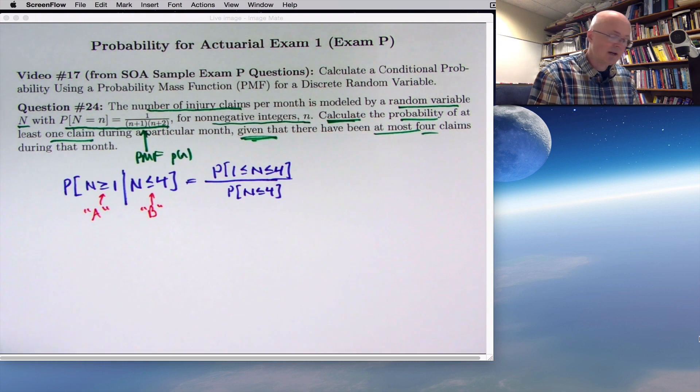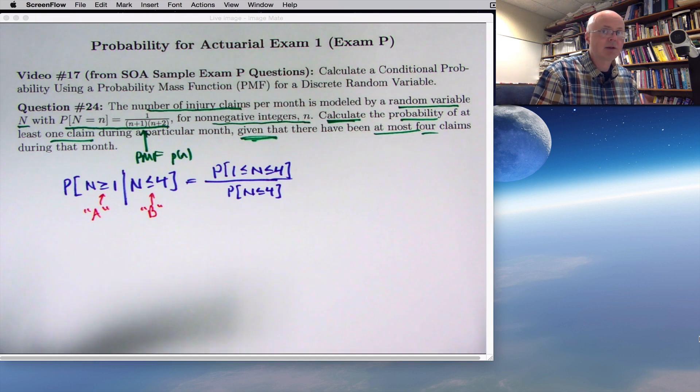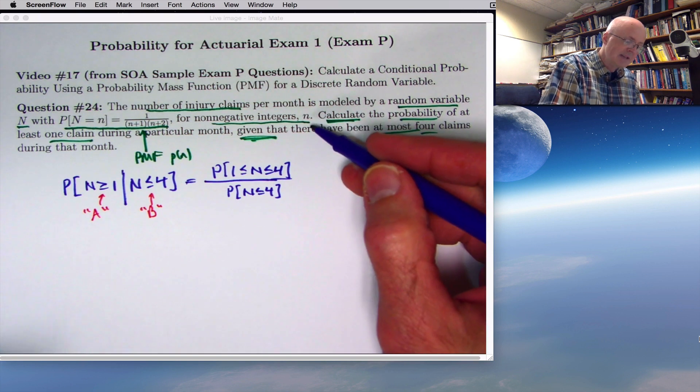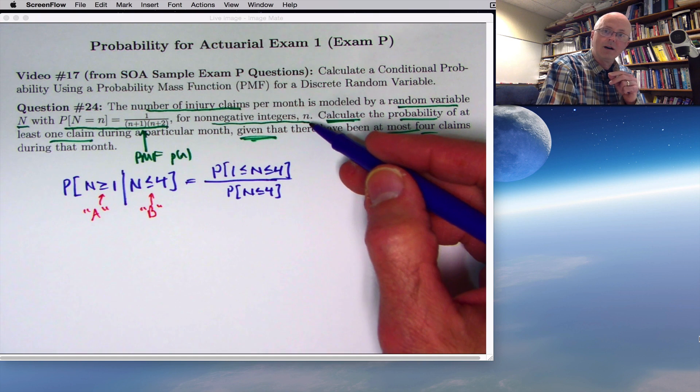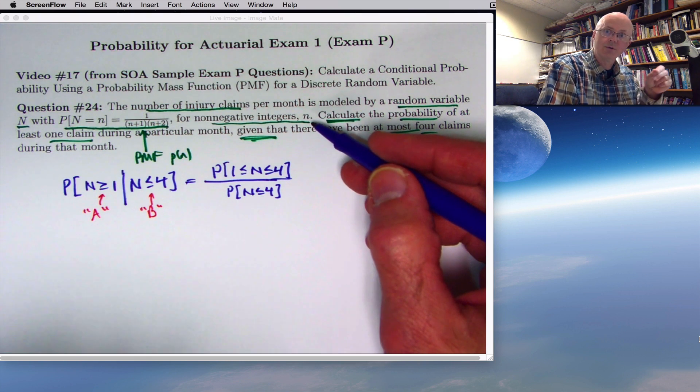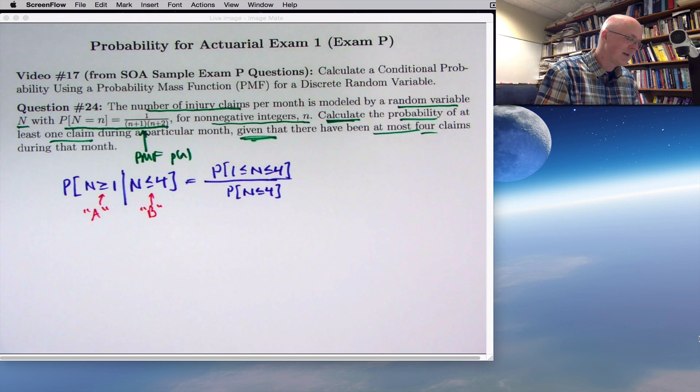By the way, the fact that this is discrete is based on the fact that there's either finitely many possibilities for capital N, or what's called countably infinite number of possibilities. It's really a countable infinite number of possibilities in this case. You can enumerate the possible values of capital N: 0, 1, 2, 3, 4, etc. That's what a discrete random variable is.